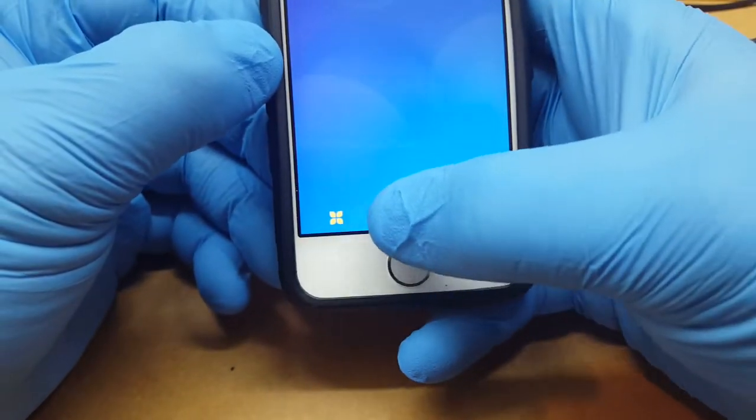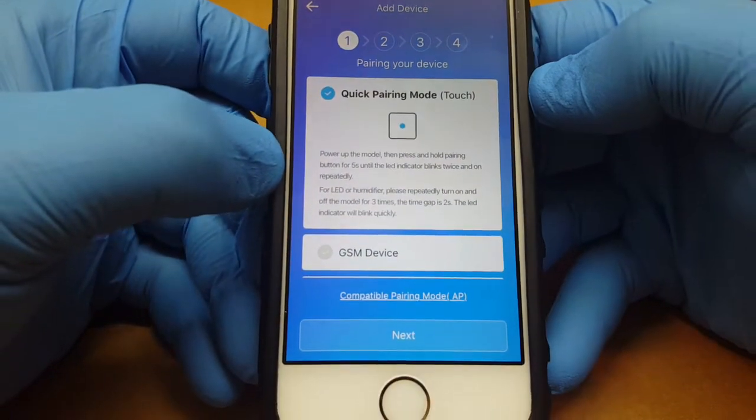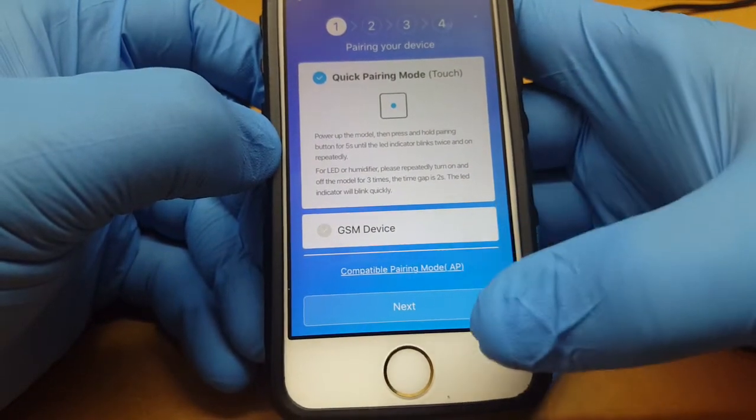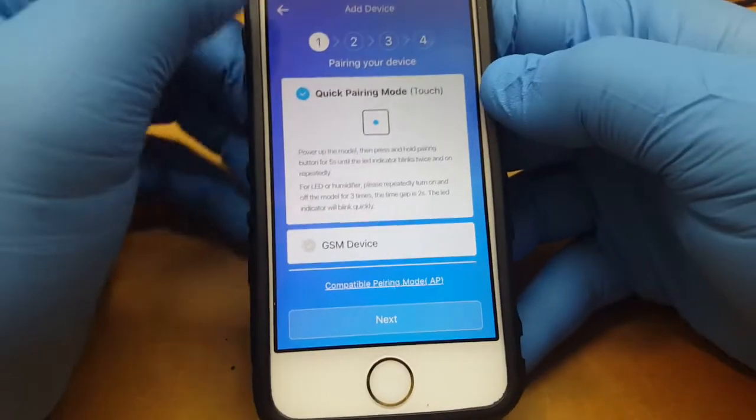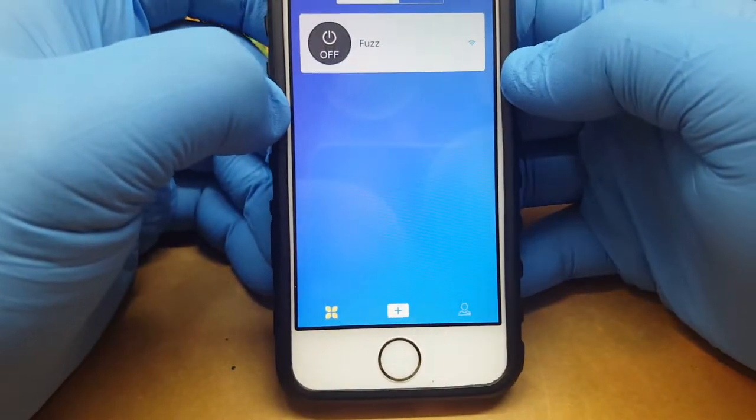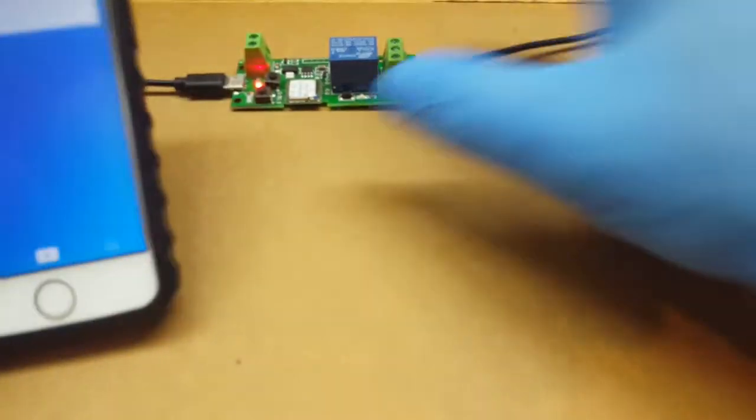Then once you have it installed, you'll just want to come down here and click on the plus. Then it'll walk you through on how to set this up. You just want to hit next - you don't want to do the GSM thing. It's pretty simple - you put in your password for your WiFi and everything.